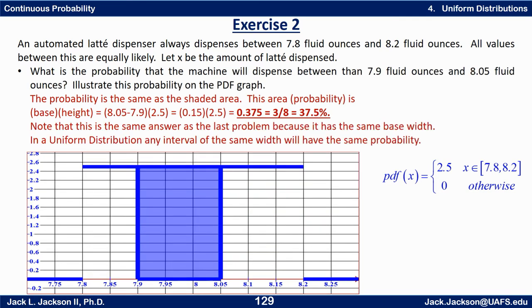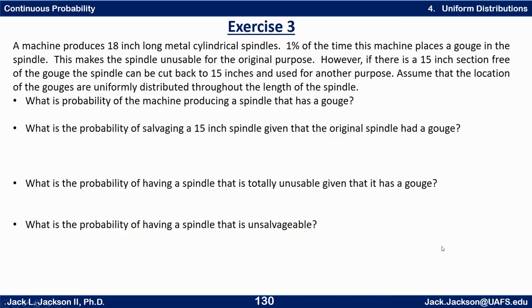Okay, what about the probability it will dispense between 7.9 and 8.05? Well, now the rectangle goes from 7.9 to 8.05. Still a total of 3 eighths for the entire area because that rectangle and that one that we just had are the same size. They're the same width and all those rectangles would be the same height for this particular distribution. And notice this is a special property of uniform distributions that any interval the same width will have the same probability for a specific uniform distribution.